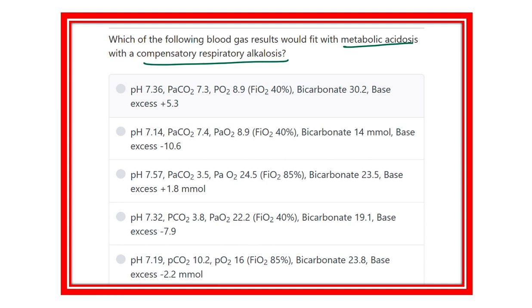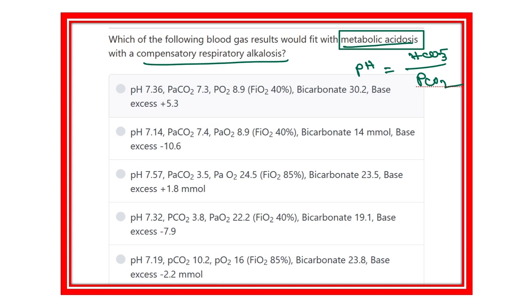It is one of the most difficult topics, but I will try to make it easy. The pH is equal to bicarbonate ion concentration and partial pressure of carbon dioxide. In metabolic acidosis, the normal body pH is 7.35 to 7.45, so when pH is less than 7.35, it is acidosis — and this acidosis occurs due to a metabolic cause.